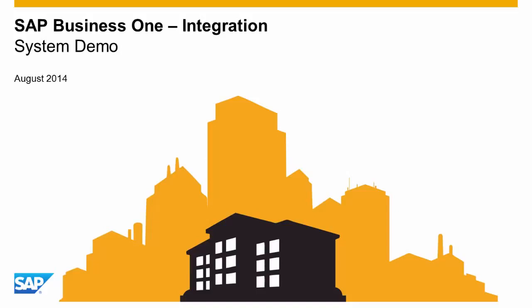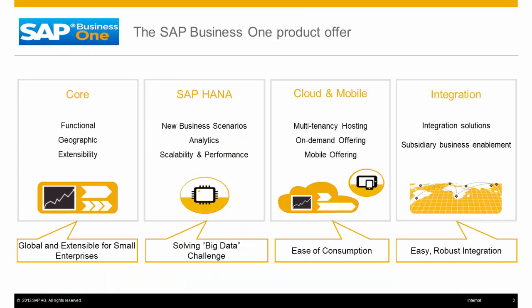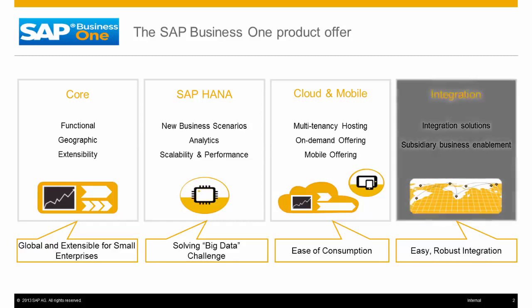Hello and welcome to the SAP Business One integration system demo. We will be covering the integration possibilities available with SAP Business One. SAP Business One's product offering covers four areas, starting with the ERP core functionalities running on the SAP HANA in-memory database platform, where analytics and high-performance scalability are introduced. SAP Business One can be on-premise or cloud-based, both offering mobile integration to key stakeholders. We will talk at a high level about the key integration solutions available and the ease with which you can integrate your business data.